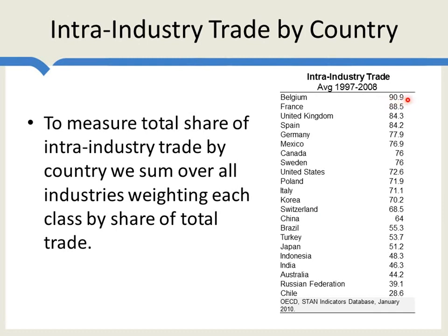The index is multiplied by 100, so instead of 0.9 we get 90. Countries near the top — Belgium, France, United Kingdom, Spain — have most of their trade as intra-industry trade; they are importing and exporting very many similar goods. Even the United States has an intra-industry trade statistic of 72, meaning the paradigmatic example for the U.S. is closer to motorcycles than to cane sugar. Towards the bottom, countries like Australia and Chile, which export a lot of minerals that they don't much import, have lower values. But for most developed countries, the intra-industry trade statistic is very high.